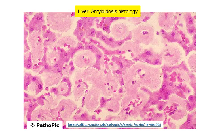So eventually this can really severely compress on the hepatic parenchyma and cause pressure atrophy of the hepatocytes. And surprisingly, though, liver function can be maintained quite well even in quite advanced cases of amyloidosis.